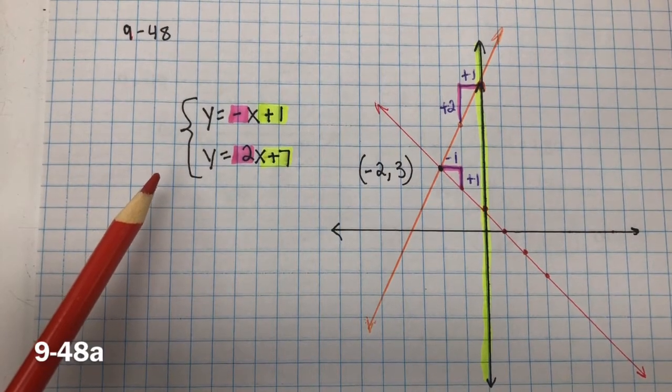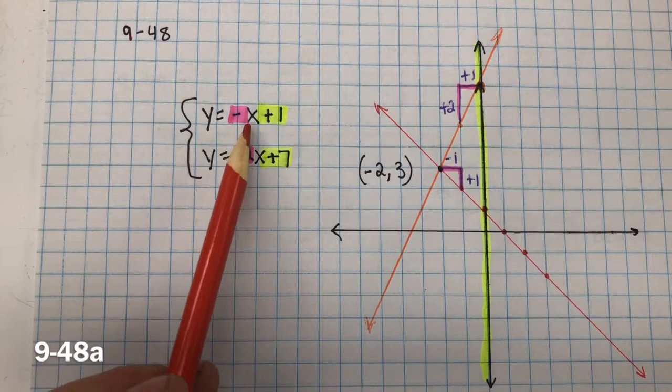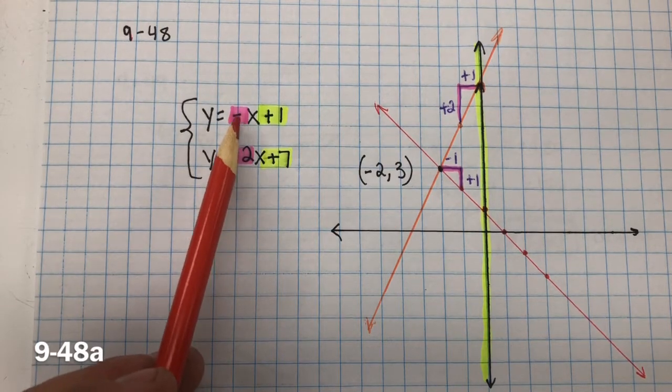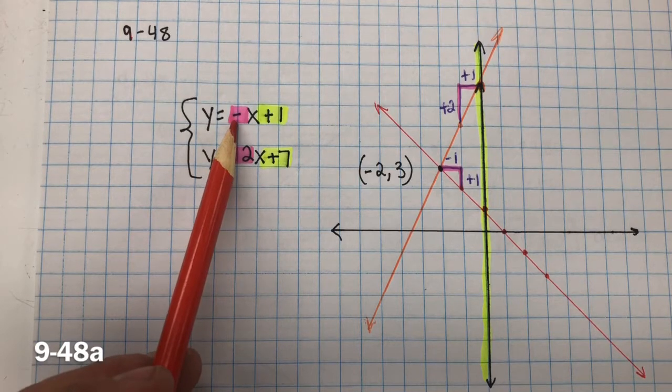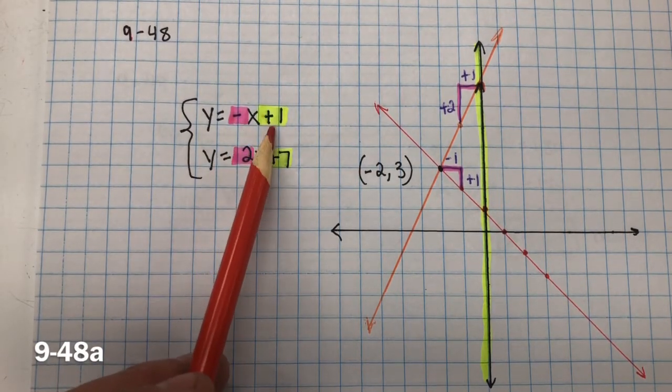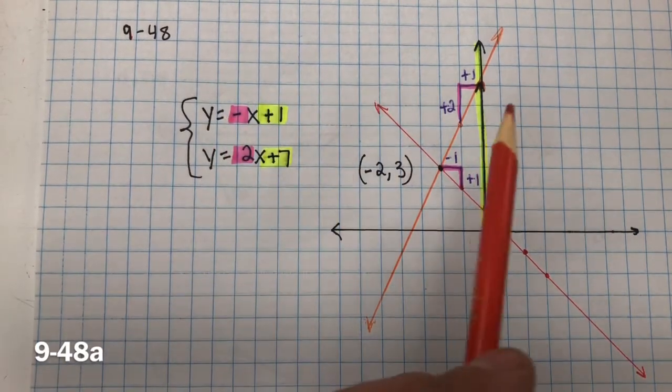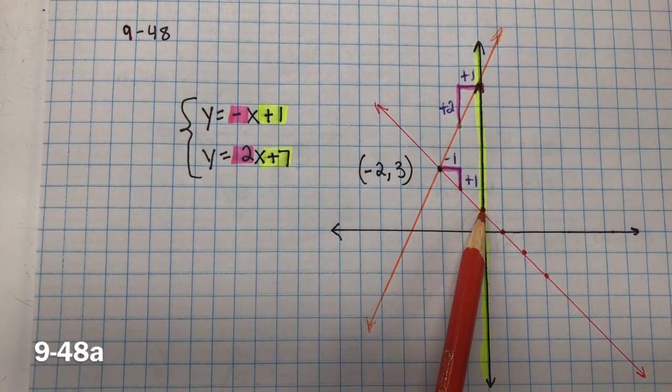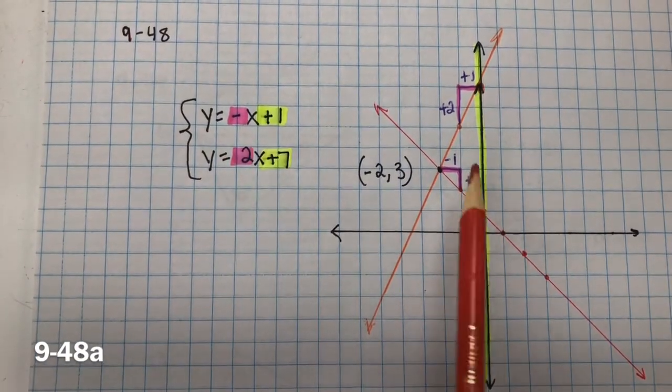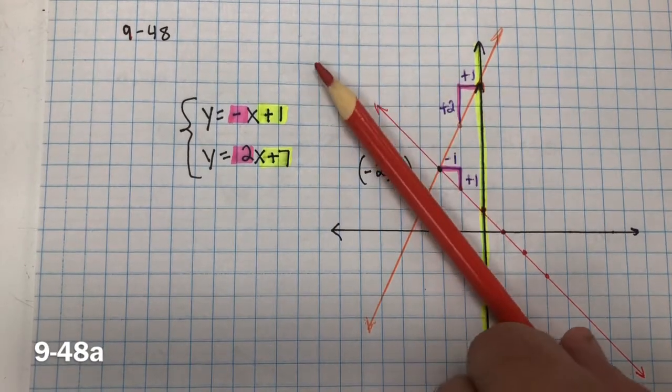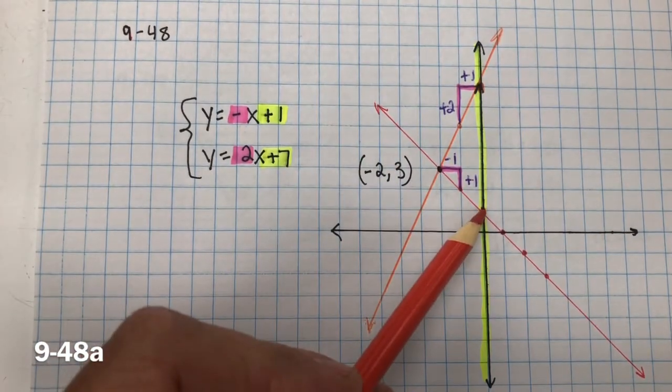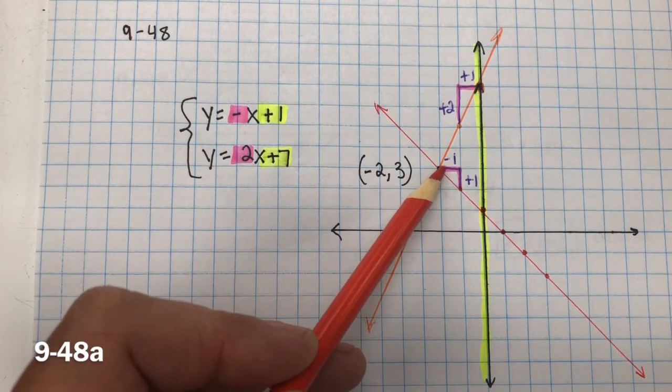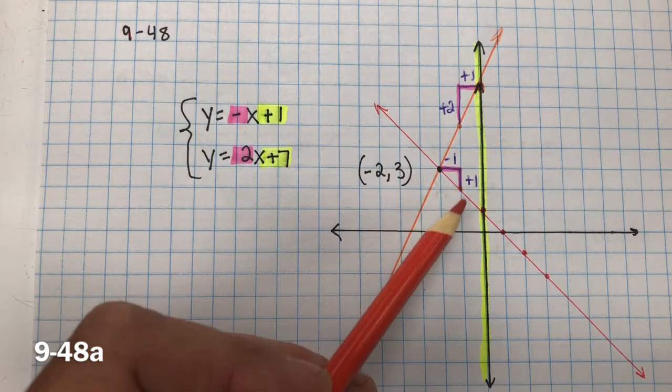For 948, we need to graph this system of equations. And in order to do that, we have Y equals negative X plus 1. Well, this is the growth rate, or the slope, and it's negative. And we can have negative 1, or we can also write negative 1 as negative 1 over 1. And this is our Y-intercept. So our Y-intercept is where it crosses the Y-axis at positive 1. And our slope is going to be a negative slope, so we know it's going to be sloping towards the negative X's. And it's going to be positive 1 over negative 1, rise positive 1, negative 1. Or I can rise negative 1 and run positive 1, negative 1, positive 1.